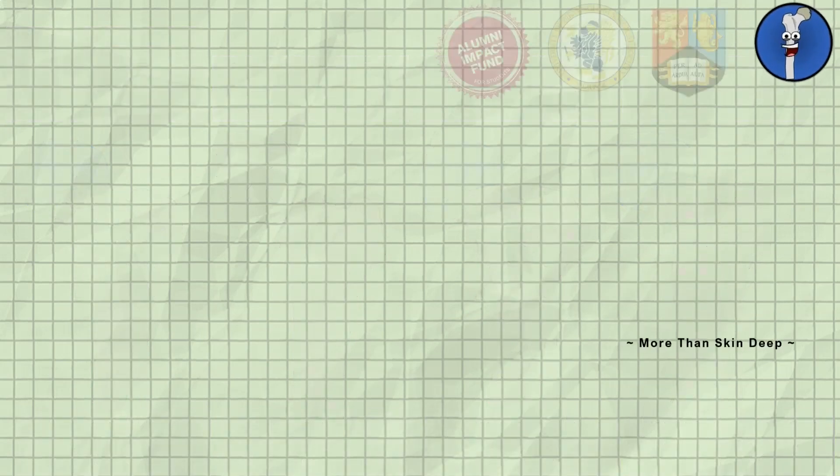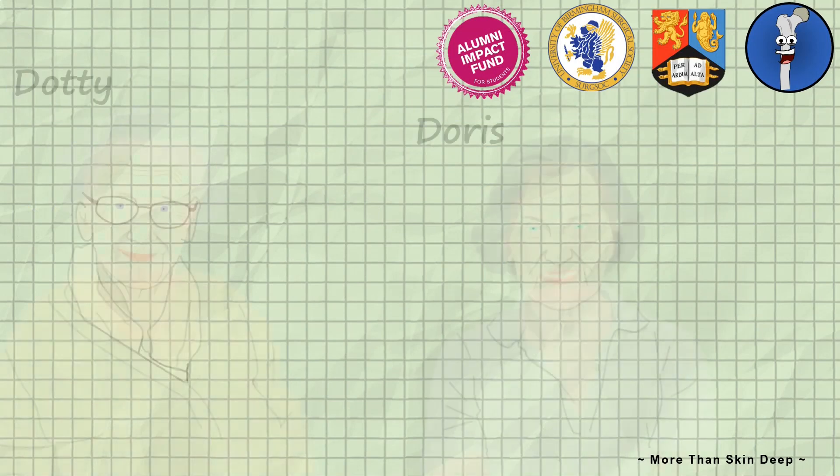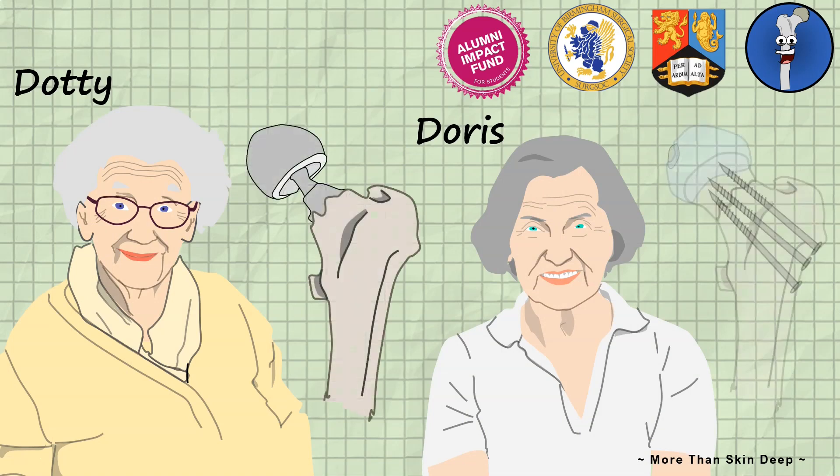So, returning to our two besties. Both suffered an intracapsular fracture to their neck of femur. However, Dottie received a hemiarthroplasty whilst Doris was treated with cannulated hip screws. Have a think about why the two were treated differently despite their similar presentations.